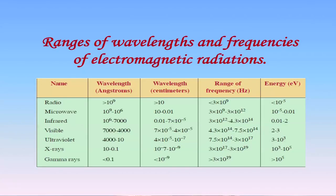You can see the electromagnetic spectrum on the screen. Gamma rays have the highest frequency while radio waves have the lowest frequency. Since wavelength is inversely proportional to frequency, the wavelength of radio waves is the highest — almost greater than 10 to the power 9 Angstroms — and the wavelength of gamma rays is very low, even less than 0.1 Angstrom.